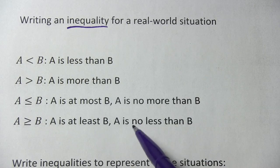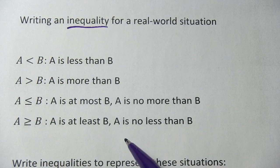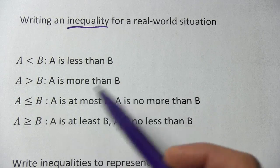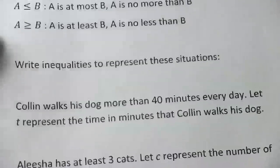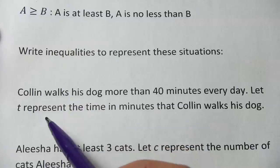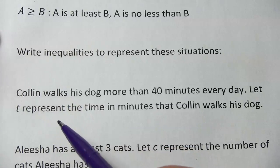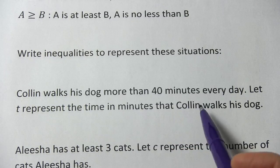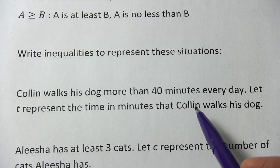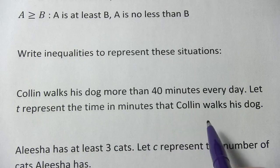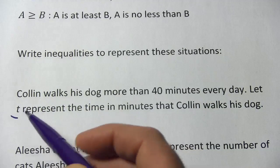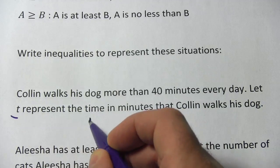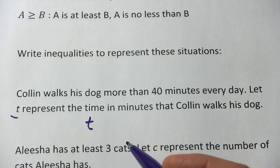So keep your eye out for these phrases. If that seems confusing, you might want to keep this little list handy while you're doing these problems. The first one says: Colin walks his dog more than 40 minutes every day. Let T represent the time in minutes that Colin walks his dog. So T is our variable, and we're going to have T and then some inequality.